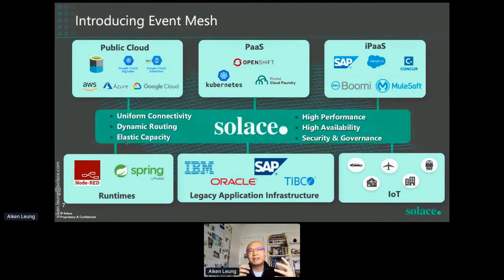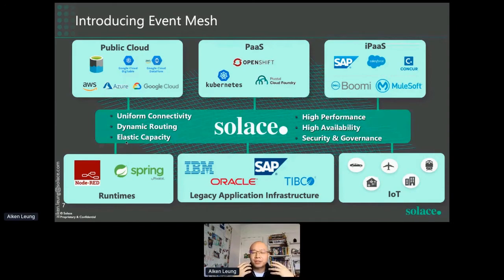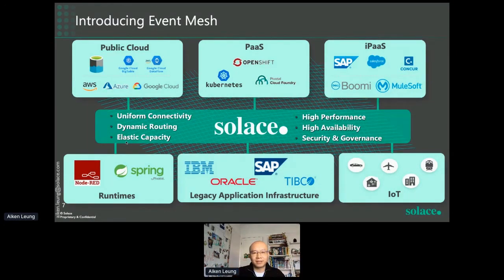What we're looking at is a layer that can connect all environments together, handling all the connectivity, performance, and high availability — so you don't need to worry about the plumbing and can concentrate on your own business logic in cloud or on-prem. We call this layer the event mesh: basically a mesh of event brokers that handles all data movement between different environments, giving you uniform connectivity, security, and governance.